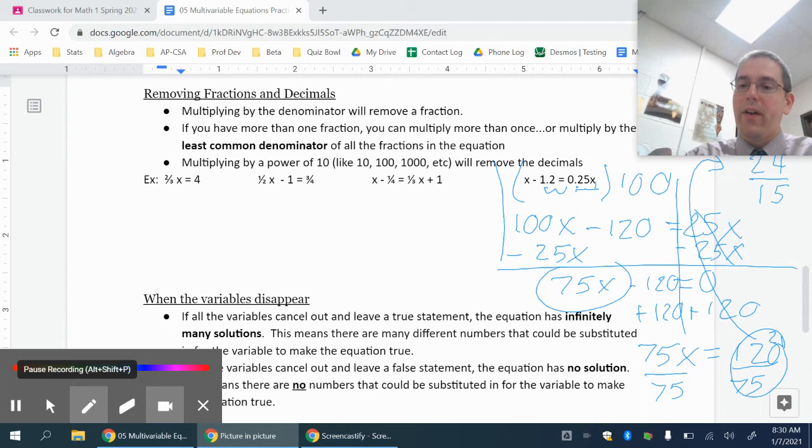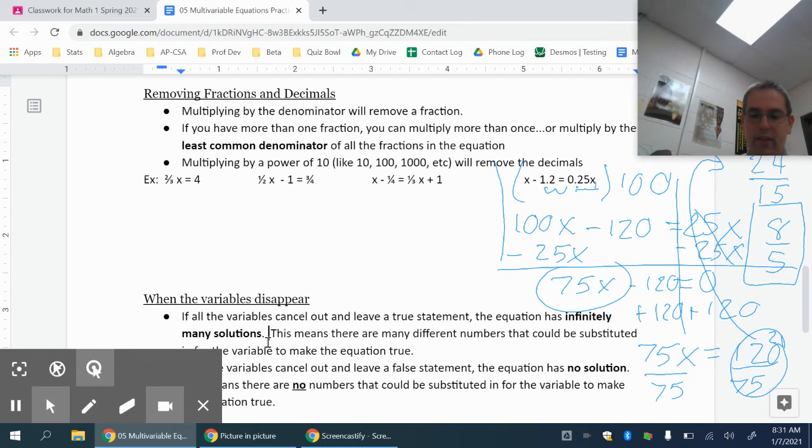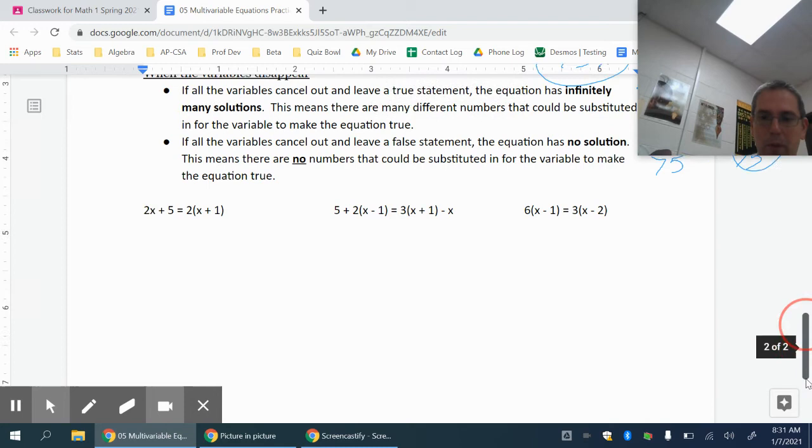24 divided by 3 is 8. 15 divided by 3 is 5. So your final answer is 8 fifths. Took me a little bit of time to reduce. Now we're going to go ahead and try these down at the bottom of the screen about when the variables disappear.